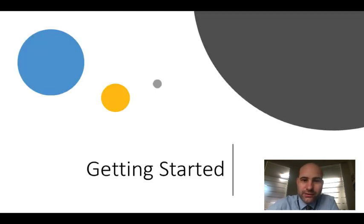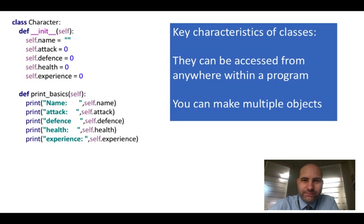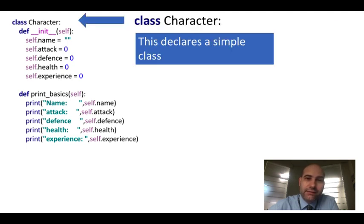How do we get started with some object orientation? The first thing is to have a look at classes. The key characteristics of classes in Python is they can be accessed from anywhere within a program and you can make multiple objects. Let's have a look at this.